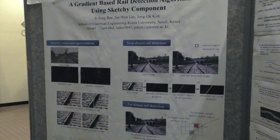This is our rail detection result using our method. This is the result using the gradient image, and this is the result using the sketch component image. Red points represent the candidate points of rails and green points represent the final result.